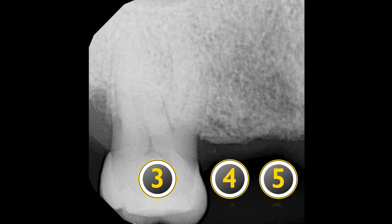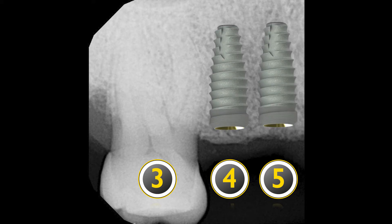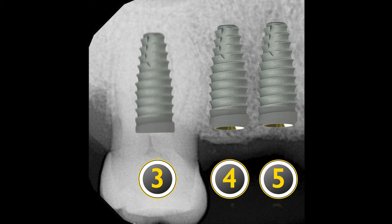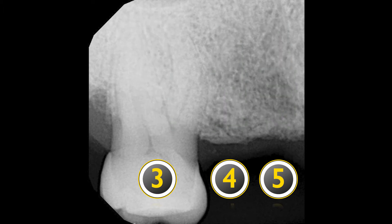Let's look at a scenario. Mrs. Smith comes into the office and presents like this on her radiograph. Just by looking at the image, we know with confidence that we could place an implant in the four and five position. But what about the three position? Not so straightforward, is it? We can see the tooth is embedded in bone, but we can't clearly determine the amount and quality of bone on tooth number three before the tooth is removed.